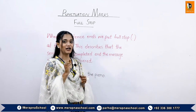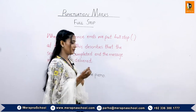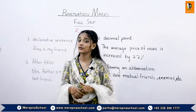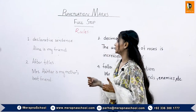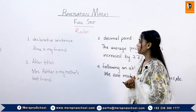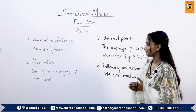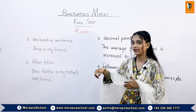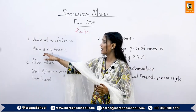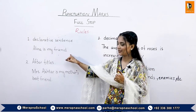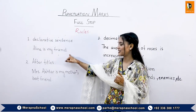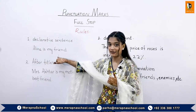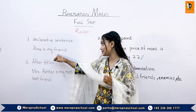To make a full stop we just touch the pencil to the page. The first rule for where we use a full stop is at the end of a declarative sentence. For example, 'Alina is my friend.' At the end of this sentence we have put the full stop because it is declaring that Alina is my friend.